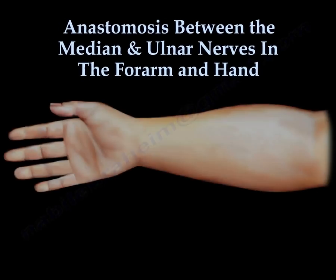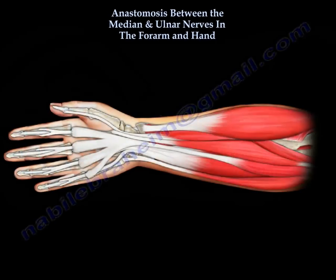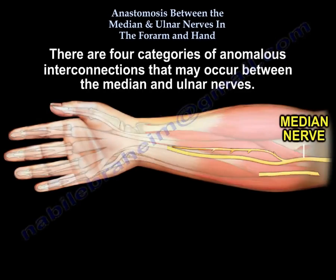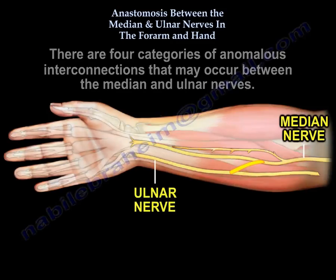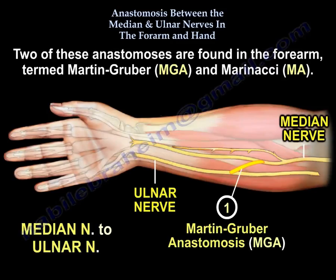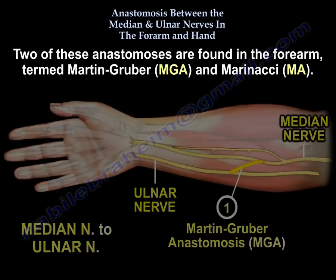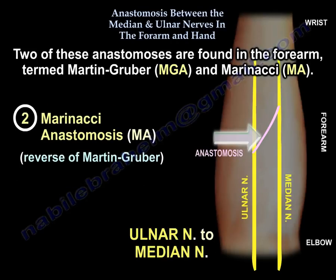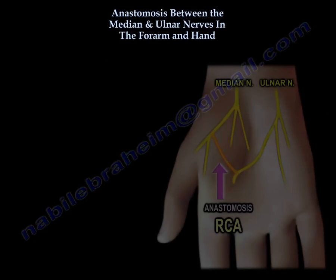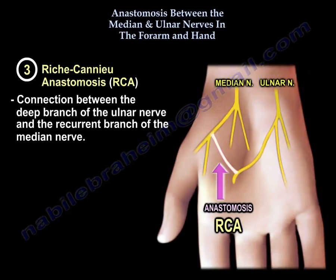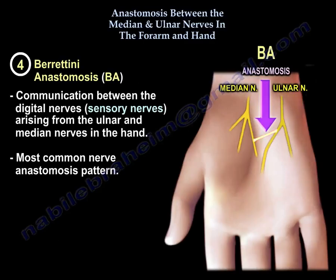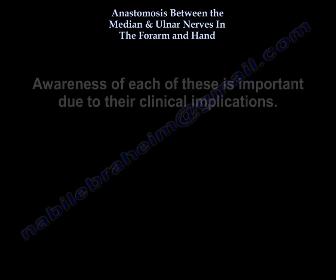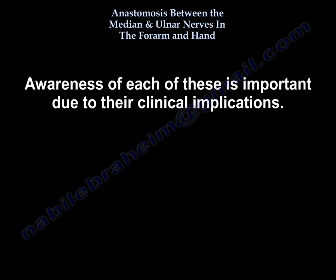Anastomosis between the median and ulnar nerves in the forearm and hand. There are four categories of anomalous interconnections that may occur between the median and ulnar nerves. Two of these anastomoses are found in the forearm: Martin Gruber (MGA) and Marinacci (MA). The remaining two, Riche-Cannieu (RCA) and Berrettini (BA), are located in the hand. Awareness of each of these is important due to their clinical implications.